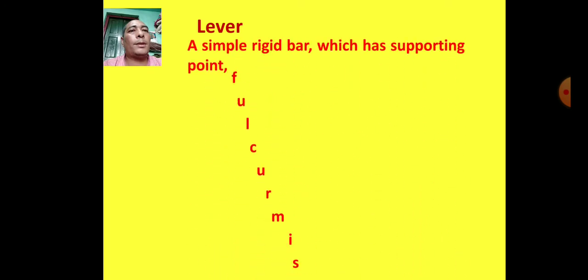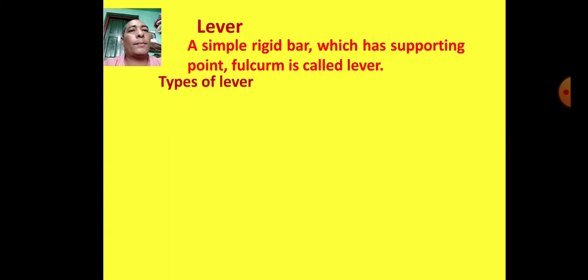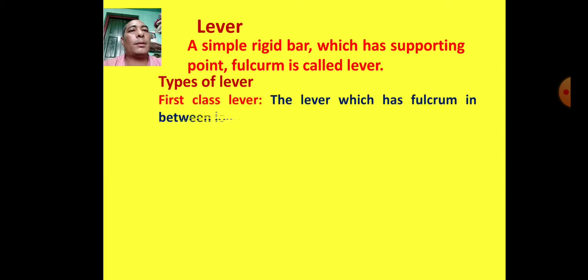A lever is a simple rigid bar which has a supporting point called fulcrum. Types of lever: First class lever — the lever which has the fulcrum in between the load and effort is called a first class lever.